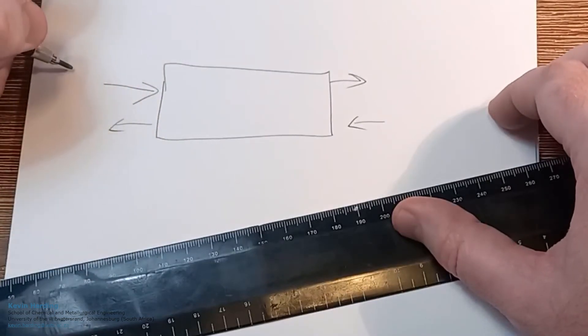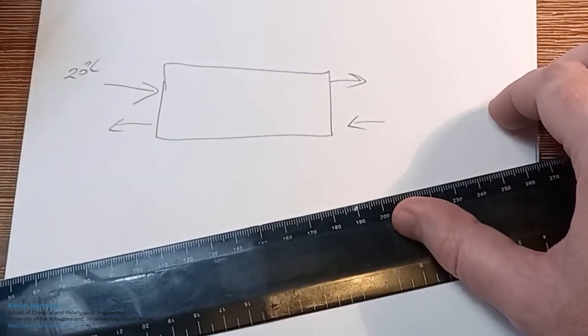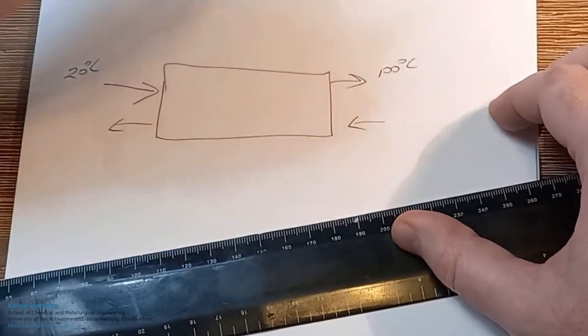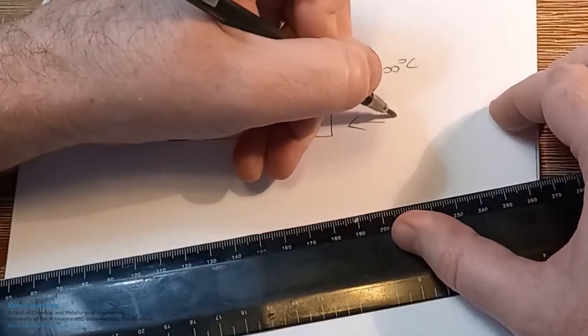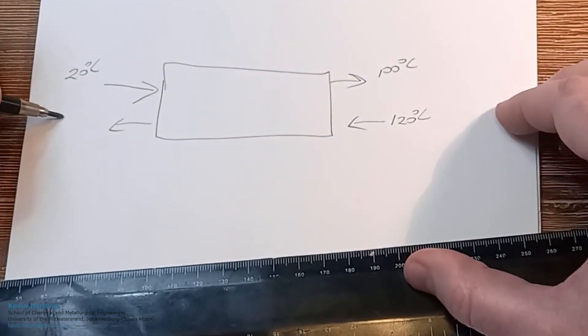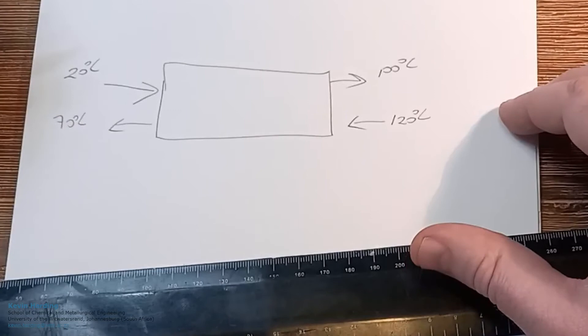If we have the top one being the cold, it is saying 20 degrees Celsius is going in and 100 degrees Celsius is coming out. The hot stream we had 120 degrees Celsius coming in and we only have 70 degrees Celsius coming out.